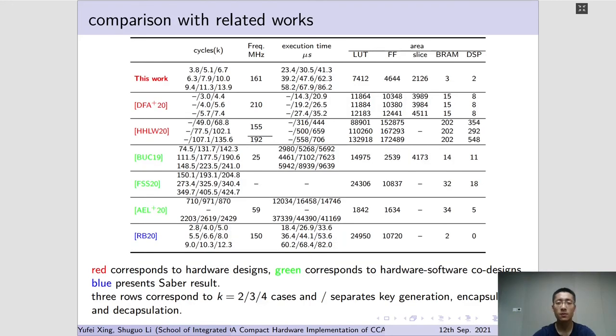With all the methods above, a compact design with decent performance is achieved. Compared with related hardware designs at that point of time, our work is not the fastest. The work in DFA-20 is more than two times faster than ours, mainly because more computation units were exploited. The LUT-FF, BRAM and DSP usage is more than 1.5 times, 2 times, 4 times and 5 times more than ours.